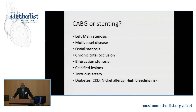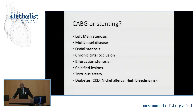Multivessel disease, osteo lesions, chronic total occlusions, bifurcation stenosis, calcified lesions, and tortuous arteries are findings on angiograms where a heart team discussion with surgeons is often needed. Patient characteristics also matter: are they too high risk for surgery? Do they have diabetes or chronic kidney disease? Certain stents contain nickel. Are they at high bleeding risk? All these factors must be accounted for before deciding which therapy to offer.